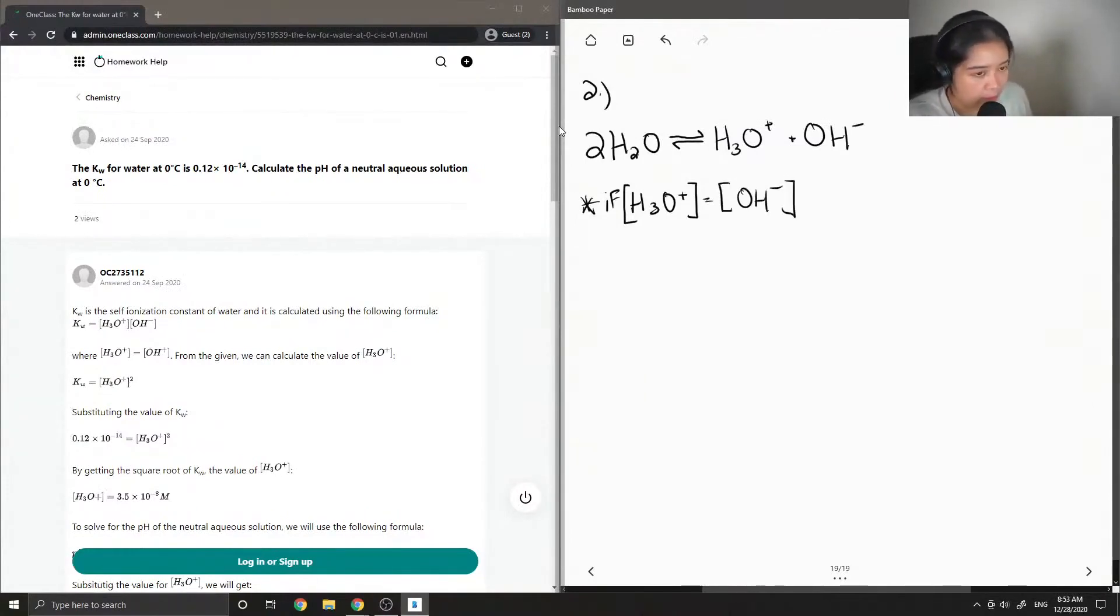So first let's recall the Kw expression, where Kw is equal to the concentration of H3O plus times the concentration of OH minus.